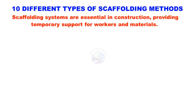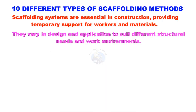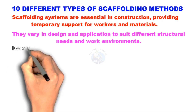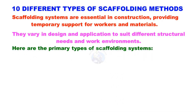Scaffolding systems are essential in construction, providing temporary support for workers and materials. They vary in design and application to suit different structural needs and work environments. Here are the primary types of scaffolding systems.